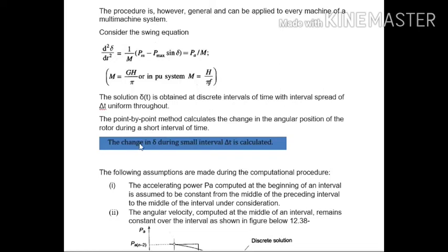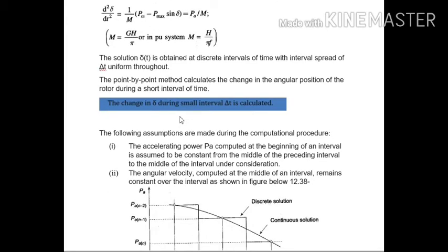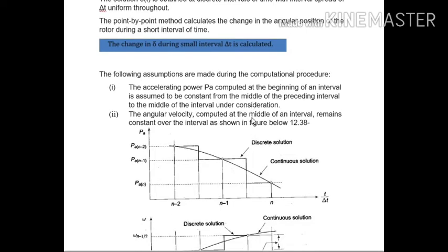The main goal of this method is to calculate the change in the rotor angle δ during a small interval Δt — that is what we are doing here. The method calculates the change in angular position of the rotor during a short interval of time. For that, certain assumptions are made, which are very useful for deriving the numerical solution. The first assumption is: the accelerating power Pa computed at the beginning of an interval is assumed to be constant from the middle of the preceding interval to the middle of the interval under consideration.